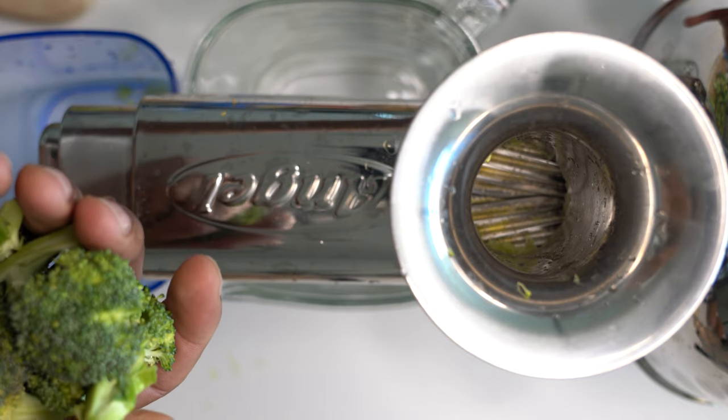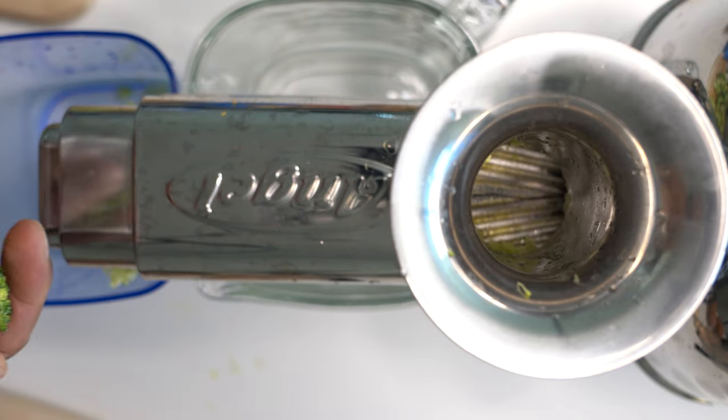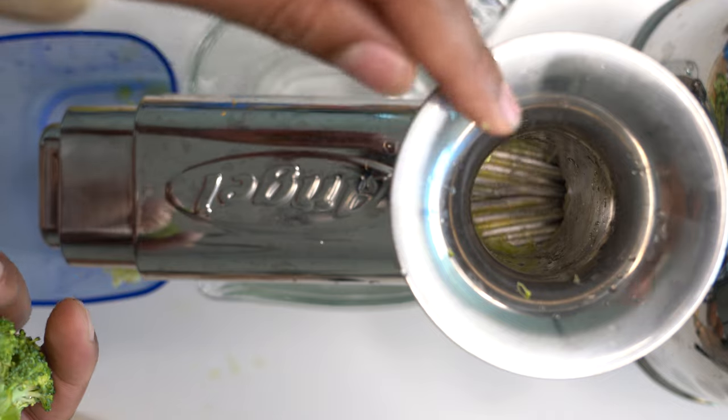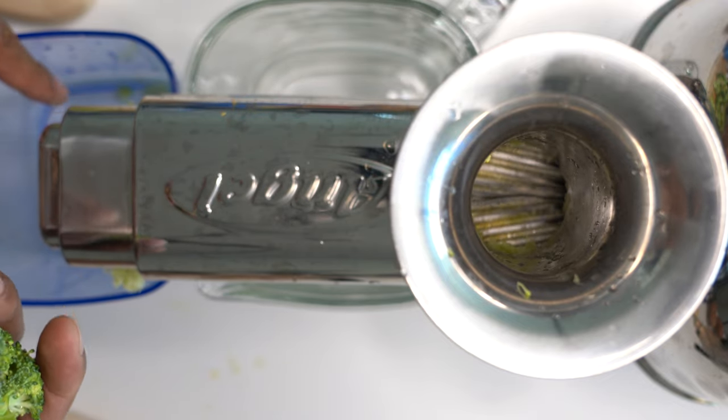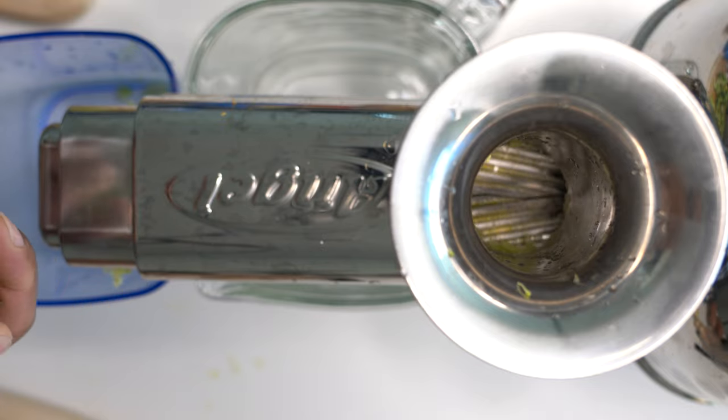I'm going to go ahead and press the start button and what's going to happen is I'm going to put it in here. It's going to juice through here and the pulp is going to come on that portion right there.